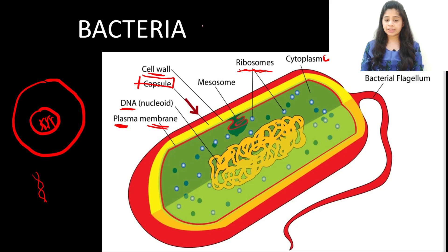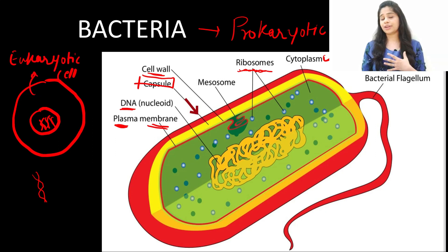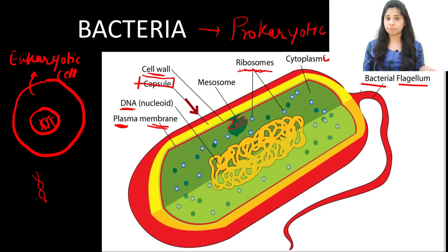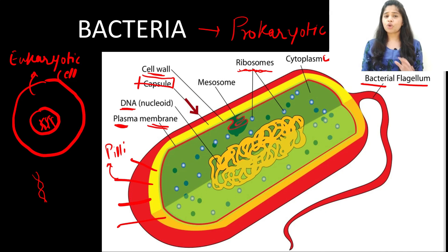In bacteria the DNA is present directly in the cytoplasm and is coiled in nature, whereas in humans the DNA is linear and enclosed in a nucleus. This type of cell is termed a prokaryotic cell, while a cell with a well-formed nucleus and condensed DNA is a eukaryotic cell. We are eukaryotes and bacteria are prokaryotes. Bacteria also have a flagellum for motility and tiny projections called pili that help in attachment to surfaces.